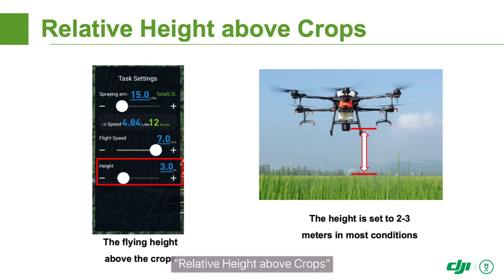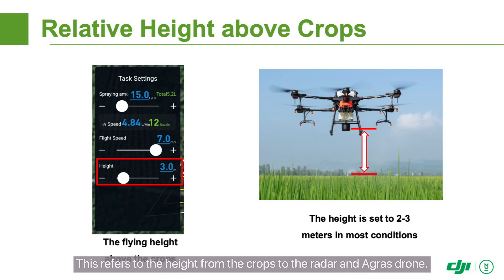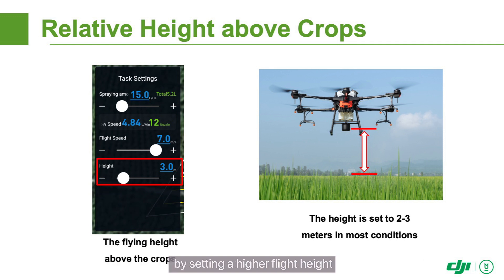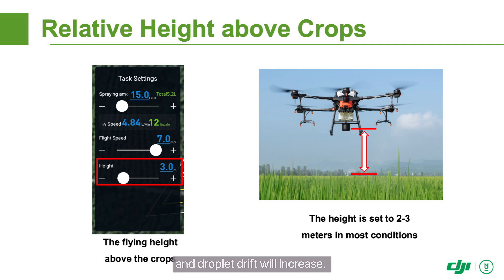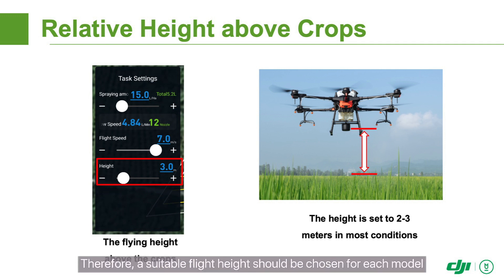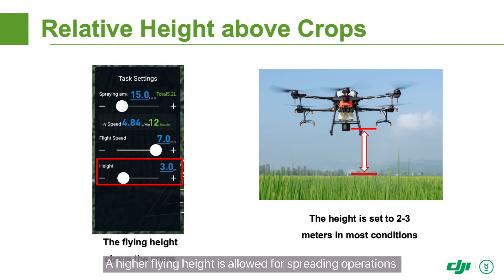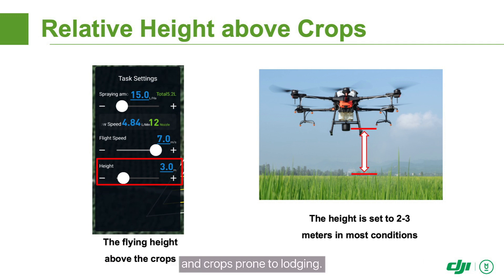Relative height above crops: This refers to the height from the crops to the radar and drone. It determines the spraying width and the downward wind field. Although you can increase the spraying width by setting a higher flight height, the downward wind field of the droplets will decrease and droplet drift will increase. Therefore, a suitable flight height should be chosen for each model based on your actual needs. For T-Series Agri drones, a height of 2–3 meters is generally recommended. A higher flying height is allowed for spreading operations and crops prone to lodging.